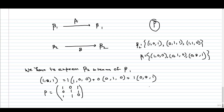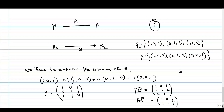If we calculate PB we get the matrix with columns (1,0,1), (1,1,1), (2,2,1), and if we calculate AP we get the same matrix (1,0,1), (1,1,1), (2,2,1). Please verify these two products. We get PB = AP, therefore B = P⁻¹AP, confirming A and B are similar matrices.